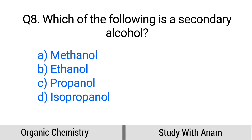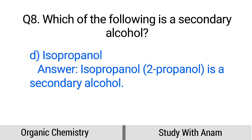Question number 8. Which of the following is a secondary alcohol? Option A: Methanol, B: Ethanol, C: Propanol, D: Isopropanol. The correct option is option D, Isopropanol. Isopropanol (2-propanol) is a secondary alcohol.